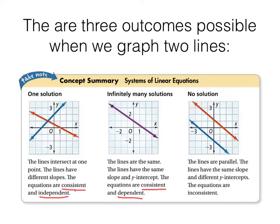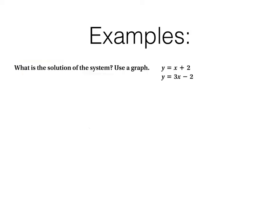And the third possibility when we graph two lines is that the two lines could be parallel. If they're parallel lines, they're never going to cross. They have the same slope but different Y intercepts. This system is what we call inconsistent because it doesn't have a solution. No solution at all. Make sure you get this information into your notebook, please, before we continue on with an example.